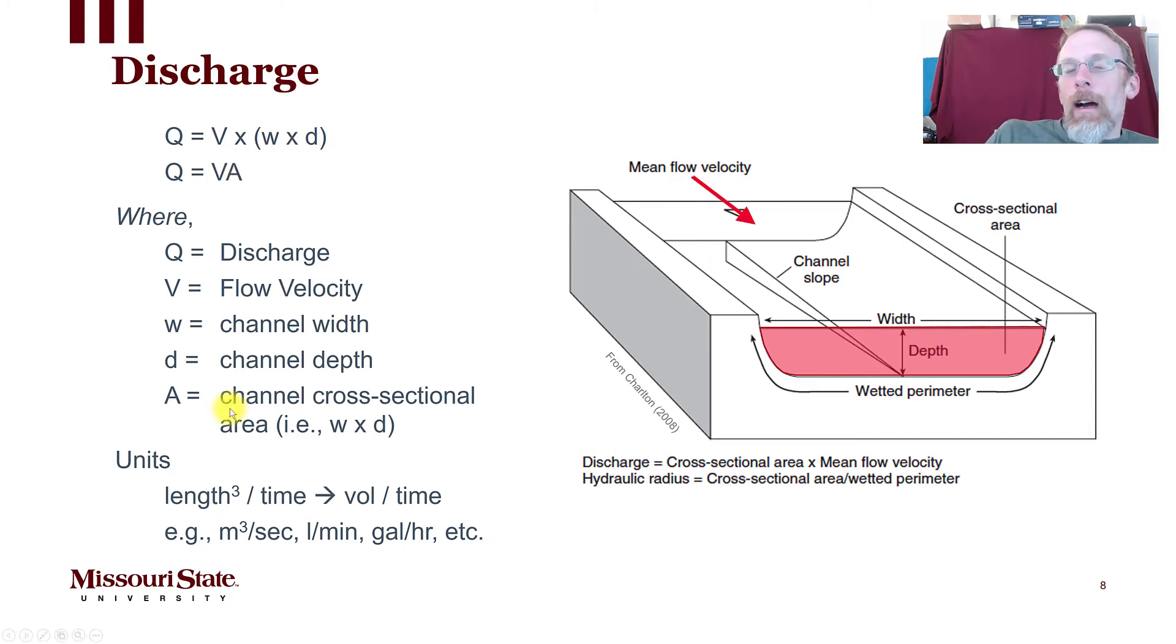So our units for discharge are volume divided by time, and volume in its simplest form would be a cubic length, so a cubic foot, a cubic meter, those are volumes. So length cubed per unit time is the strict definition of the units for discharge. Usually that's expressed as cubic meters per second, liters per minute, gallons per hour, etc., or some combination of those, whatever is appropriate for the context you're working in.